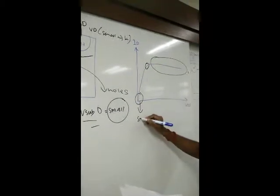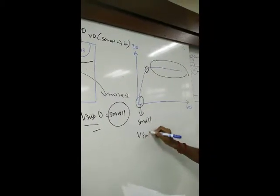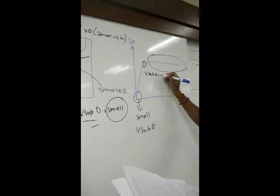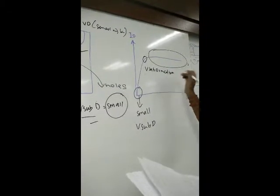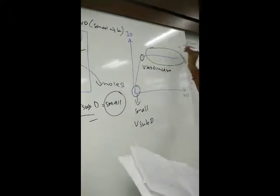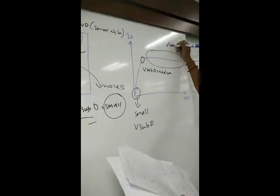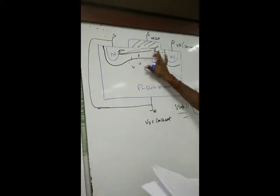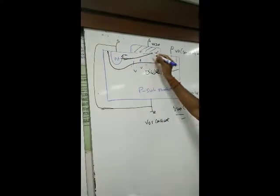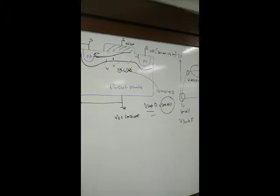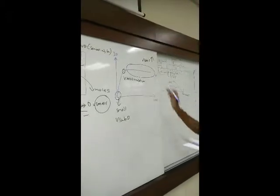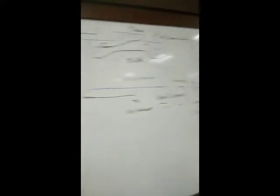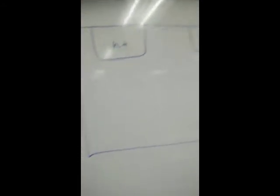We can summarize this: When VDs is small, we have the first case. When VDs is medium, we get the second case with channel narrowing. When VDs is larger, we get saturation because the channel reduces more and pinches off.